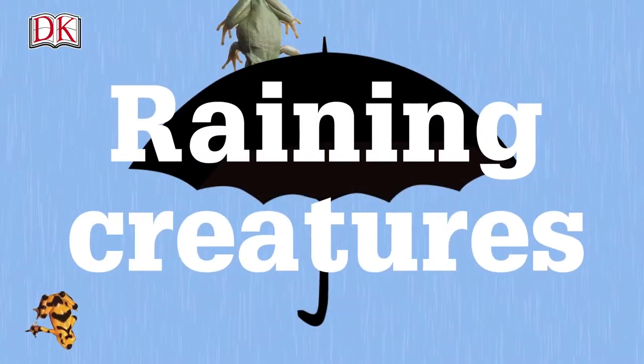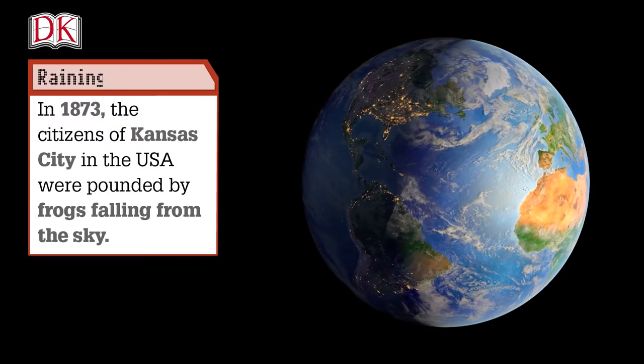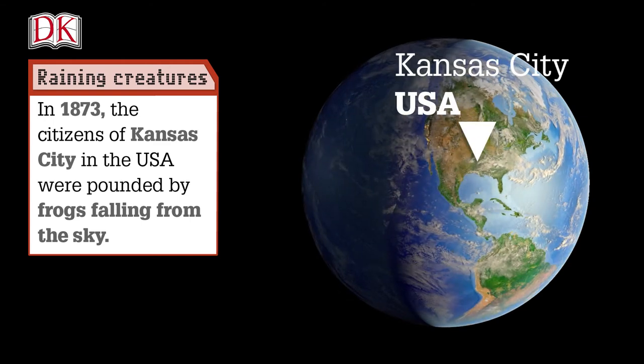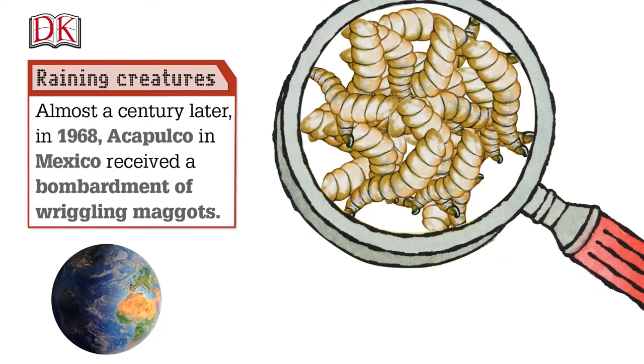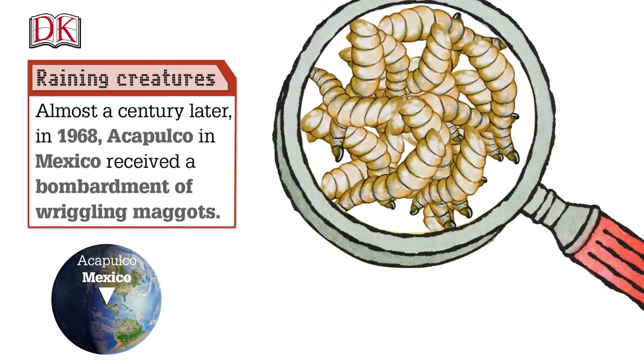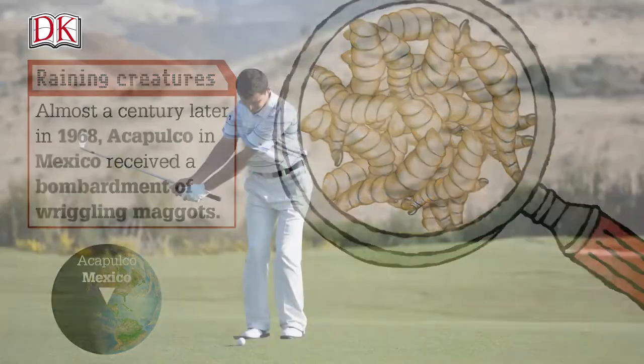Raining Creatures. In 1873, the citizens of Kansas City in the USA were pounded by frogs falling from the sky. Almost a century later, in 1968, Acapulco in Mexico received a bombardment of wriggling maggots.